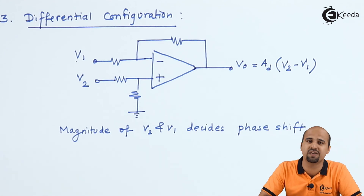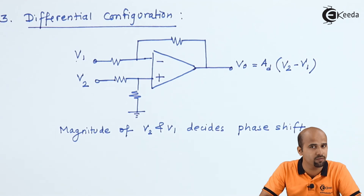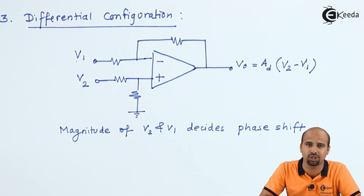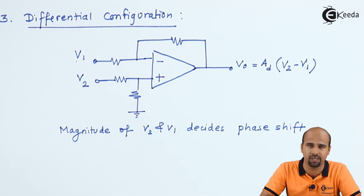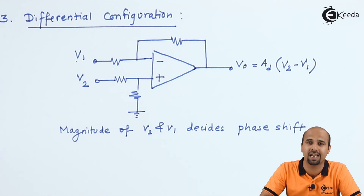So these three configurations we have studied in this basics of operational amplifier: inverting configuration, non-inverting configuration, and differential configuration. We will stop here; for upcoming videos we will learn more applications of operational amplifier based on these three configurations. Thank you very much for watching — if you liked this video, please like, share, comment, and subscribe to the Ikeda channel.